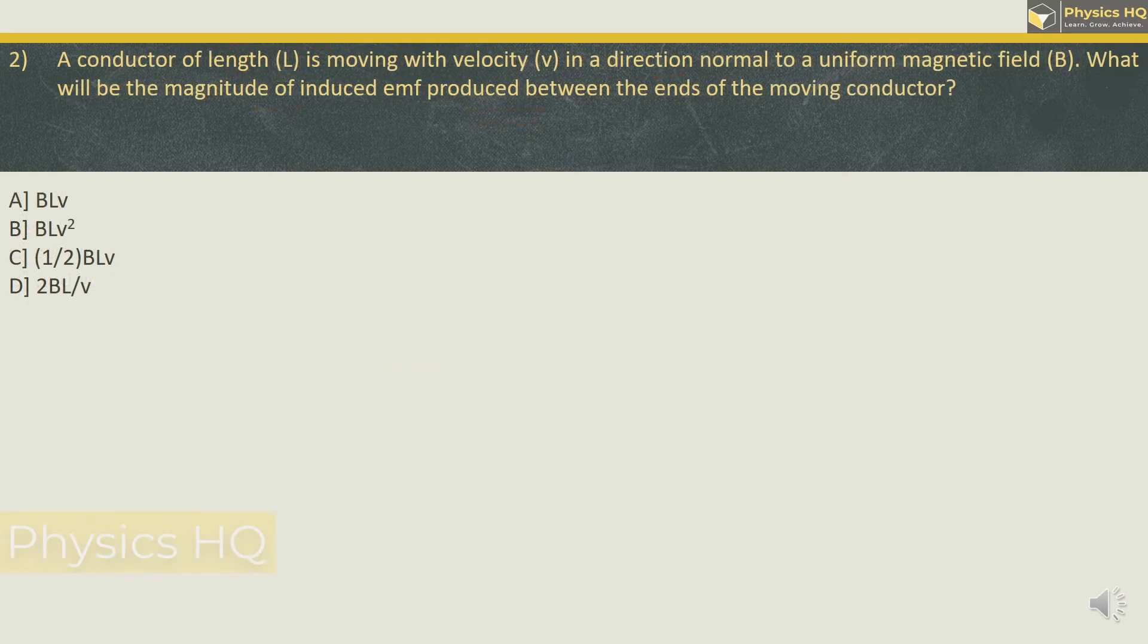Let us go ahead to the next MCQ. A conductor of length L is moving with velocity V in a direction normal to the uniform magnetic field. What will be the magnitude of induced EMF produced between the ends of the moving conductor?